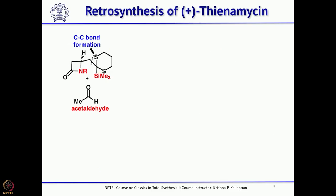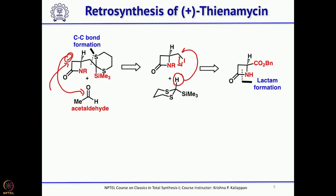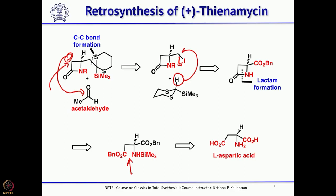For the monocyclic compound, one can perform an aldol reaction — generate the anion and do an aldol with acetaldehyde to introduce the CH3CHOH side chain. The alkylation step uses TMS-1,3-dithiane treated with butyllithium to generate the anion, which attacks in an SN2 substitution. The 4-membered lactam can be obtained from the corresponding ester via simple lactamization between two protected amino acids, starting from commercially available L-aspartic acid.